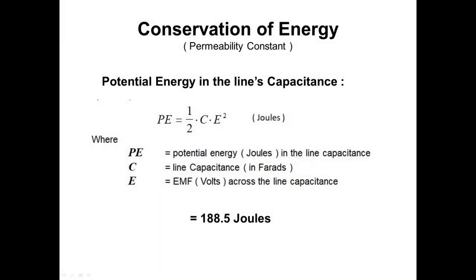The potential energy stored in the capacitance of the line is given by this equation. Pe equals one-half times C times E squared expressed in joules, where Pe is the potential energy in joules in the line's capacitance. C is the value of the capacitance expressed in farads, and E is the voltage across the capacitance expressed in volts. In this case, the potential energy equals 188.5 joules. But this only represents one-half of the total energy applied to the line. 188.5 joules are missing.